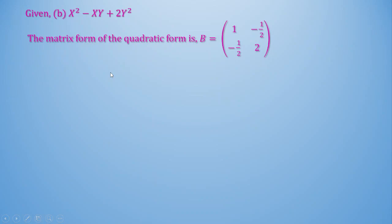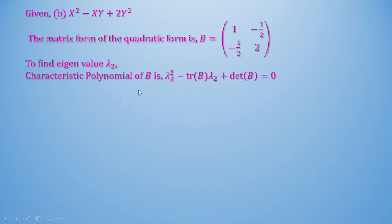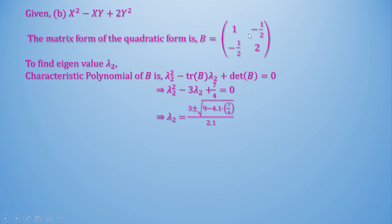Now let's check the rank and signature of the next quadratic form B: x² - xy + 2y². In matrix form, 1 is the coefficient of x², 2 is the coefficient of y², and the coefficient of xy is -1, divided into two parts: -1/2 and -1/2. The characteristic polynomial is λ₂² - trace(B)·λ₂ + det(B) = 0, where trace(B) = 1 + 2 = 3 and det(B) = 2·1 - 1/4 = 7/4.